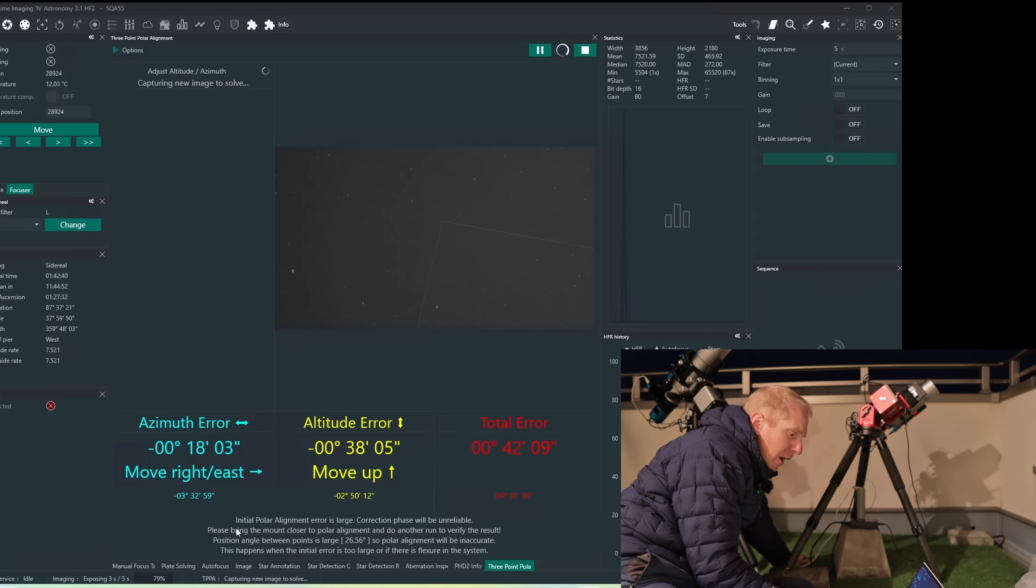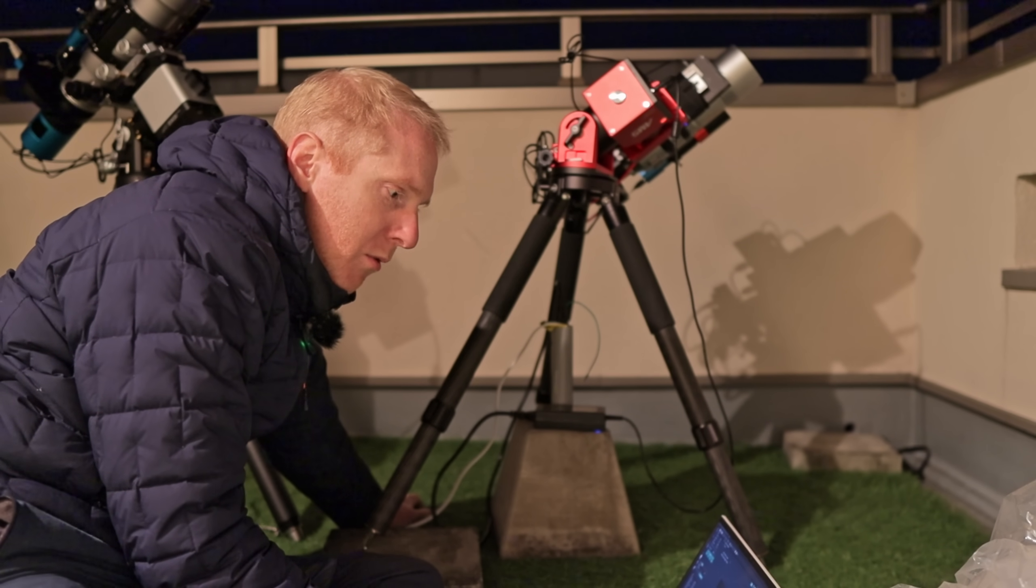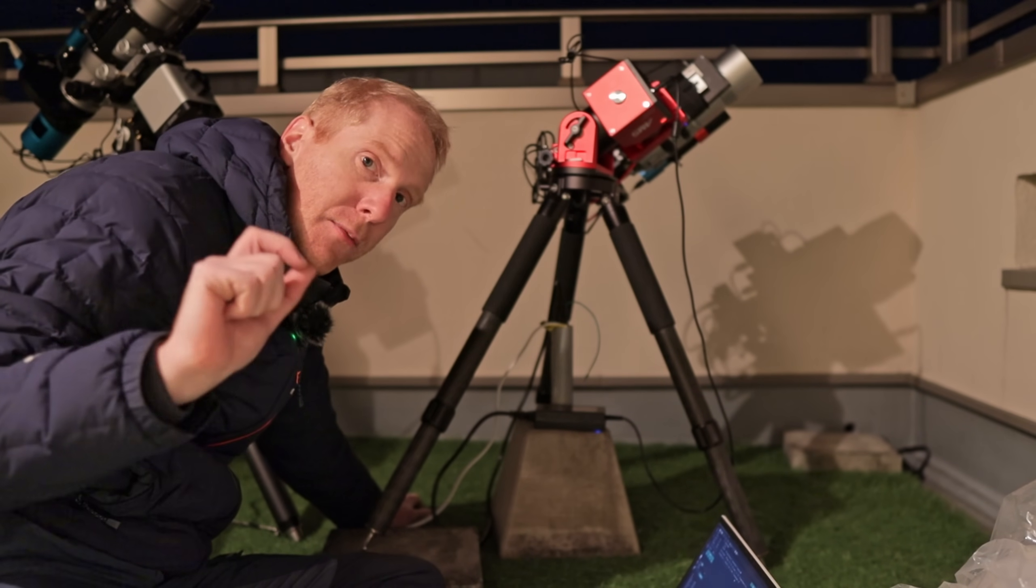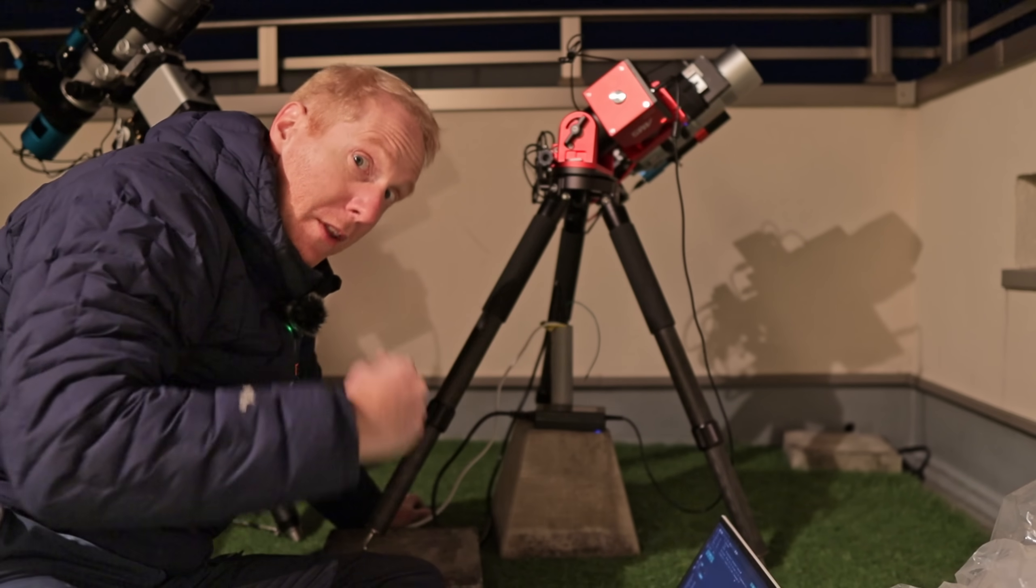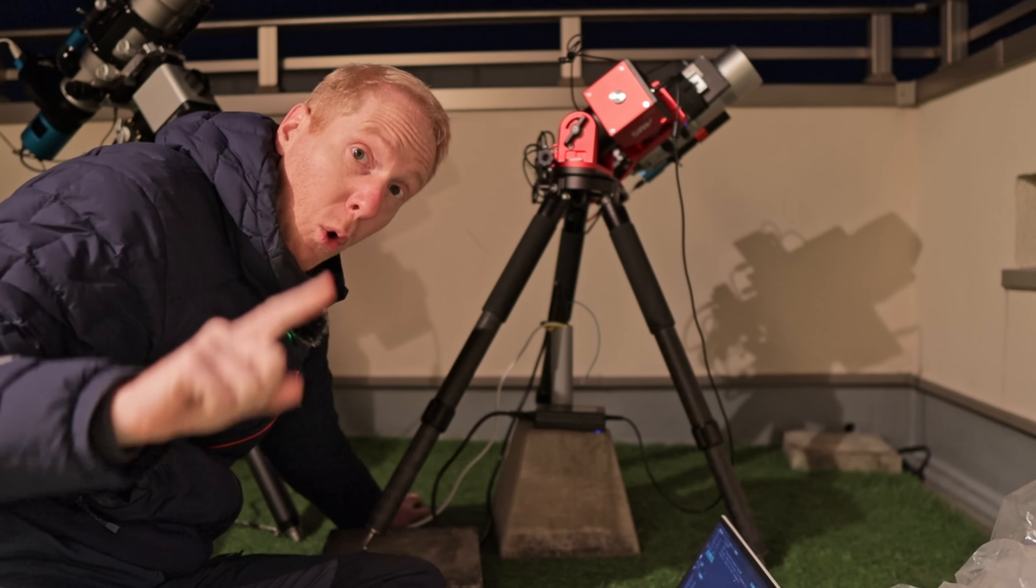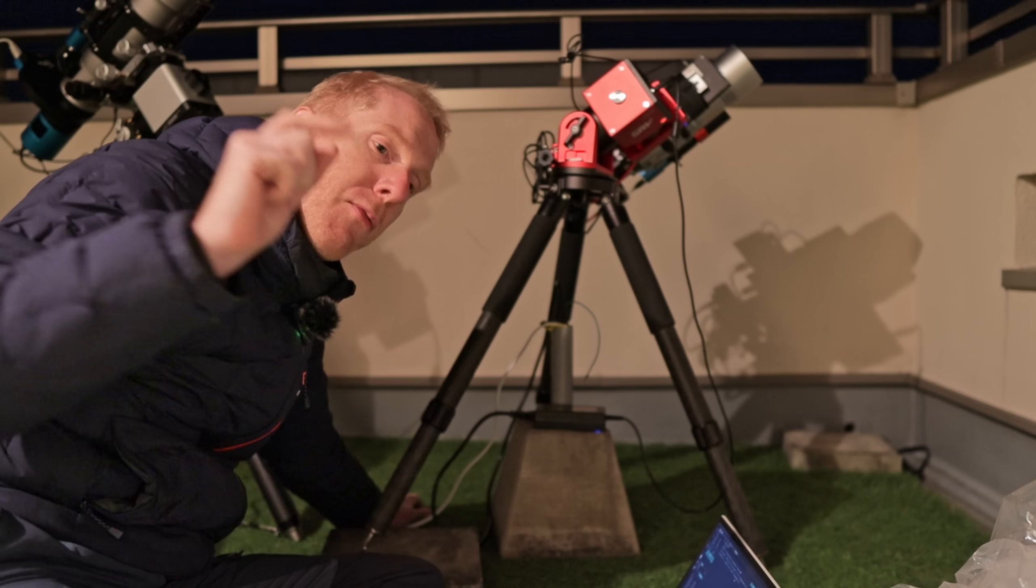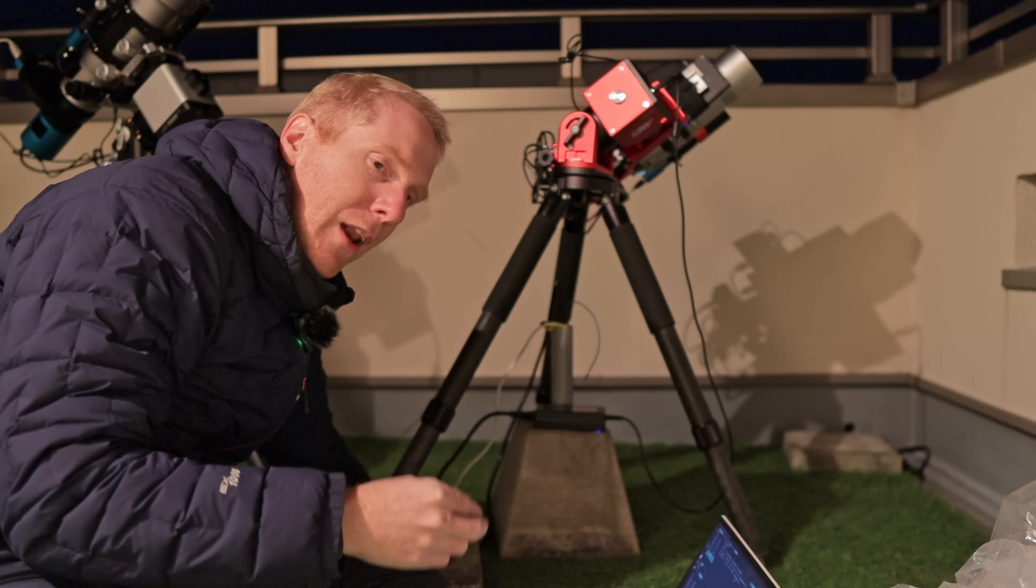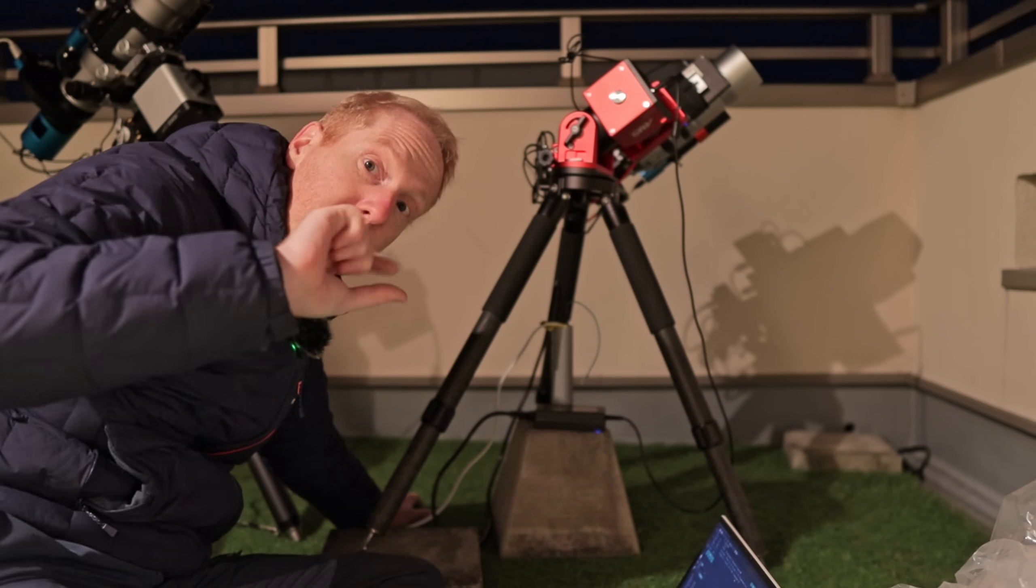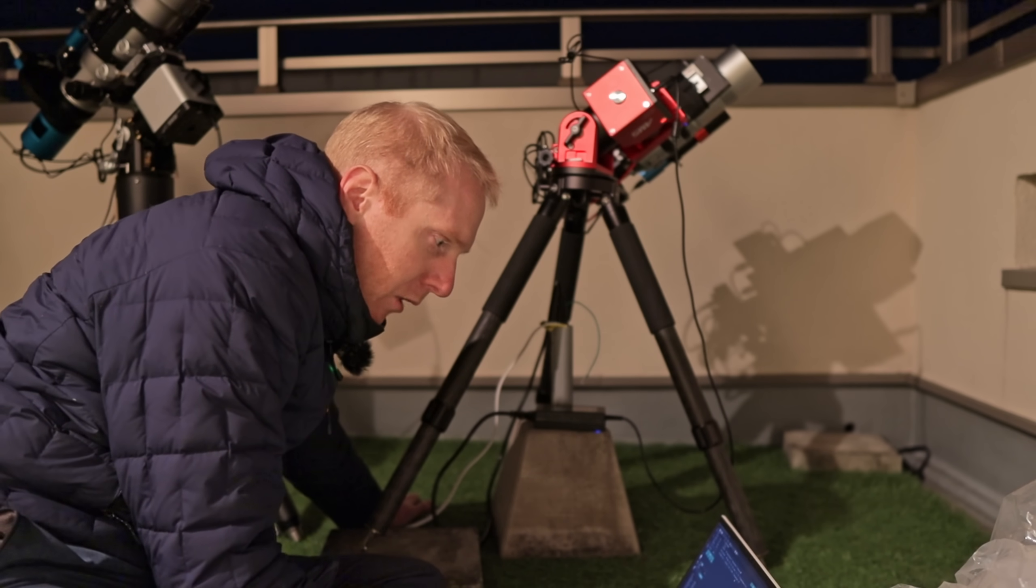So now I'm actually fairly close. I'm going to stop that and redo the polar alignment from scratch. This is because I started with a large difference in polar alignment, which reduces the precision of the final alignment achieved. This is also true with the ASI Air. If you start your polar alignment routine and you're more than one or two degrees off, you will want to do it twice in a row, just to be sure.